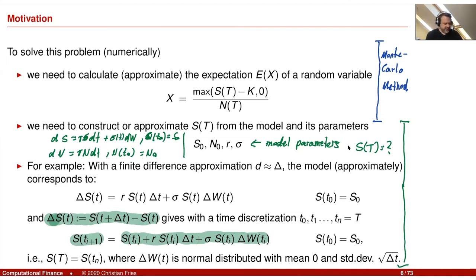So this second part is the time discretization of stochastic differential equations. And when we combine these two numerical methods, we can numerically solve the problem to calculate the option value in the Black-Scholes model. Okay, so that was it for this little motivation session.